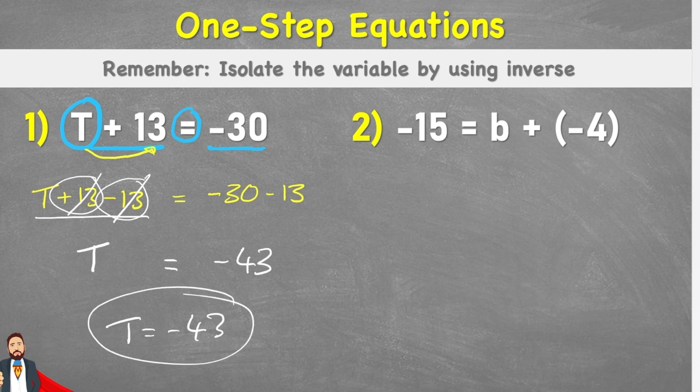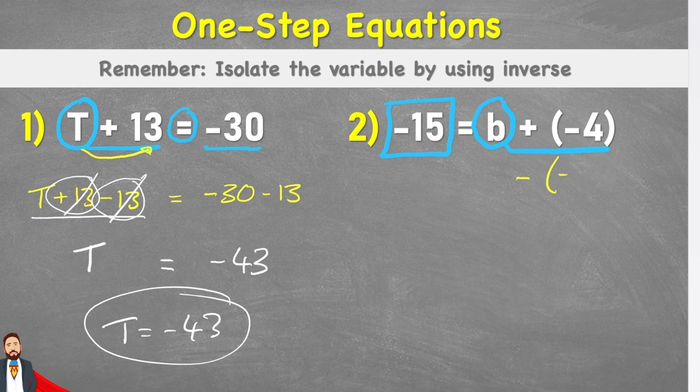On this side, we have the negative 15 on the left-hand side. And then on this right-hand side, I have my variable that's connected currently to an adding negative 4. So again, to get this variable on its own, we need to break this connection to the adding negative 4. And the only way we can do that is by putting the inverse. So in order to get the inverse of the adding negative 4, we're going to insert a subtract negative 4. And by putting that subtract negative 4 on this side, I therefore have to put it on the other side as well.